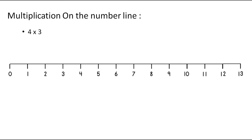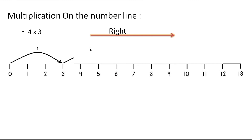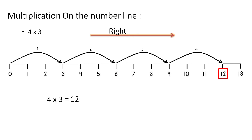Now we will understand multiplication on the number line. Whenever we multiply the numbers by using number line, we have to start from 0. Here the question is 4 into 3, means 4 times 3. So we have to move 3 units at a time to the right, and as it is 4 times 3, we make 4 such moves. The first move will be on 3, the second move is on 6, third move is on 9 and the fourth move is on 12. So, the answer of 4 into 3 is 12.